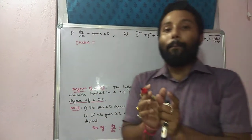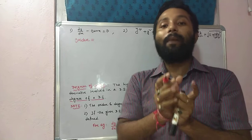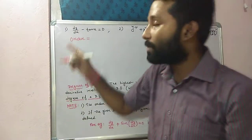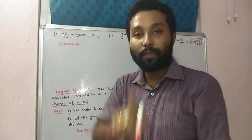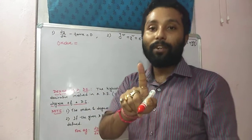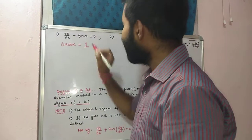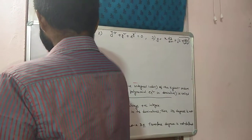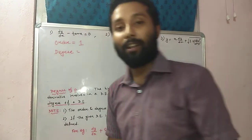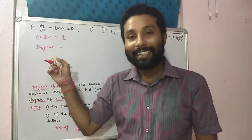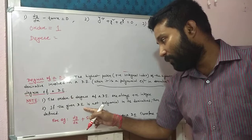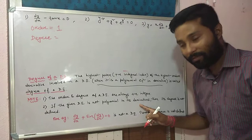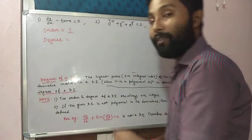Ye equation mein ekhi bar differentiation kiya gaya hai. dy/dx means first order derivative — ekhi bar differentiation kiya gaya hai. So order is one. Next, how to find the degree? In order to find the degree, if the given differential equation is not polynomial in its derivative, then degree is undefined. Ye baat mind mein rakh ke, phir degree find out karo.